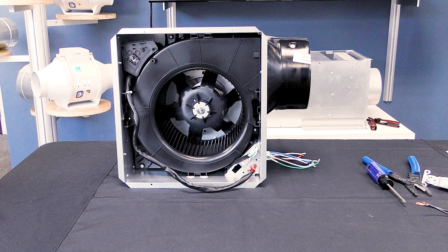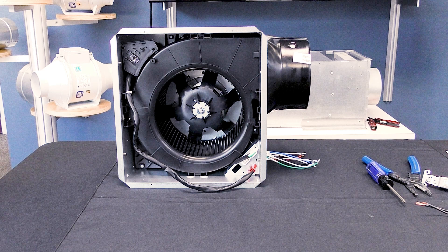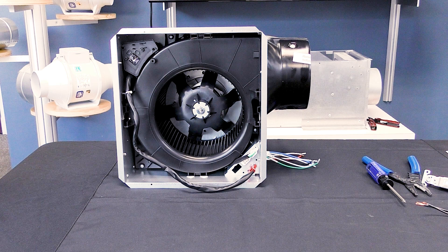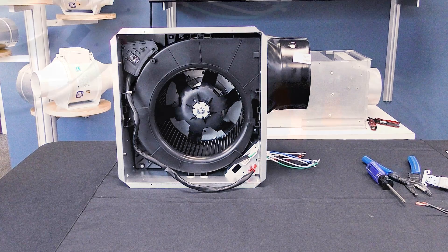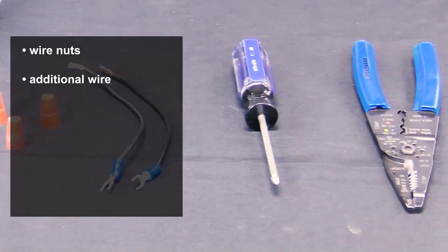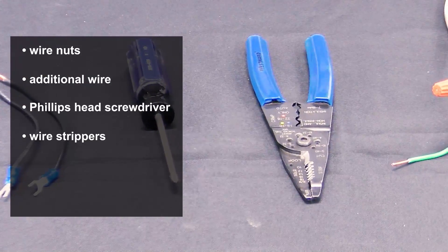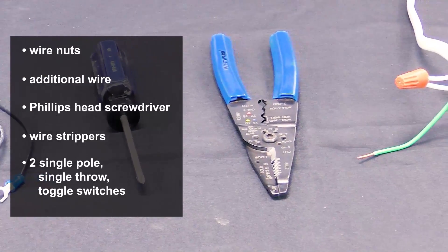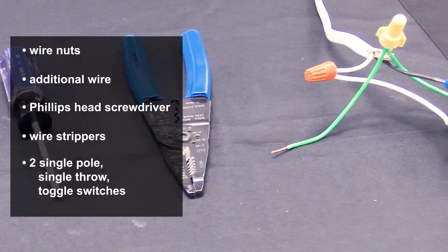Next, gather your supplies including your Premium Choice AC model fan with plug-and-play sensor pre-installed, wire nuts, additional wire, a Phillips head screwdriver, wire strippers, and two single-pole, single-throw toggle switches.